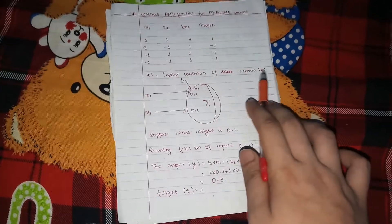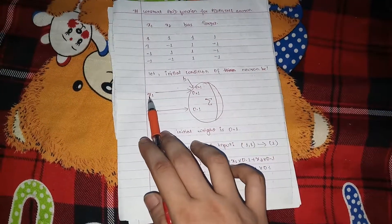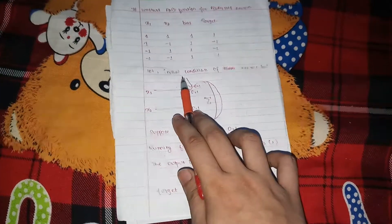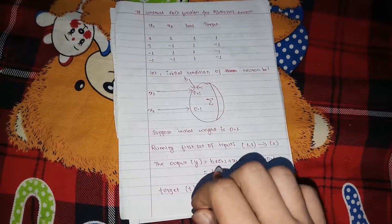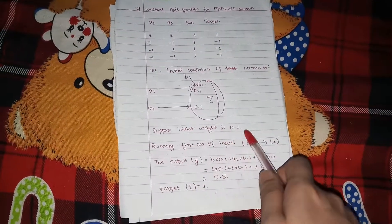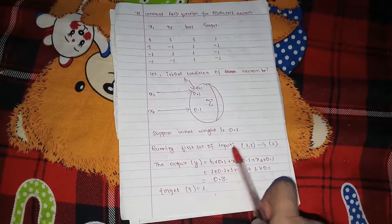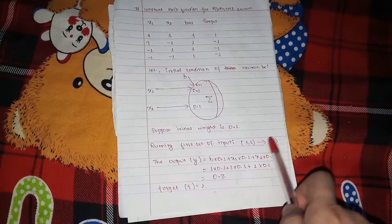So initial condition for the neuron: let's suppose X1 and X2 are the input, B is the bias, and I am supposing that the weight is 0.1, 0.1, and 0.1. Suppose the initial weight is 0.1. Running the first case, the input 1 and 1 should give the output 1.